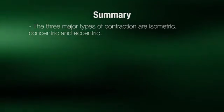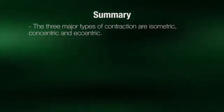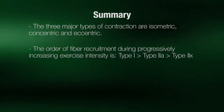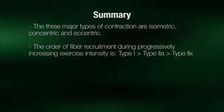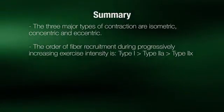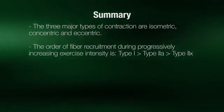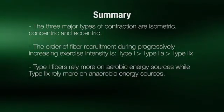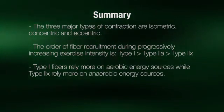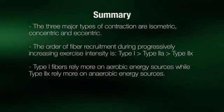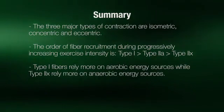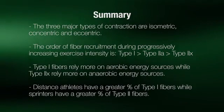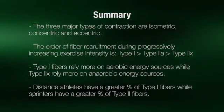In summary, the three major types of contraction are isometric, concentric, and eccentric. The order of fiber recruitment during progressively increasing exercise intensity is type 1 initially followed by type 2A and type 2X. Type 1 fibers rely more on aerobic energy sources, while type 2X rely more on anaerobic energy sources. Distance athletes have a greater percentage of type 1 fibers, while sprinters have a greater percentage of type 2 fibers.